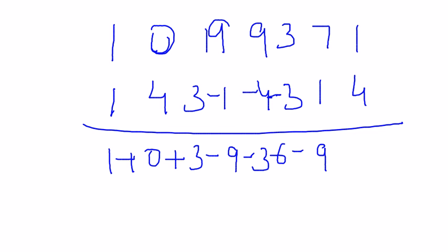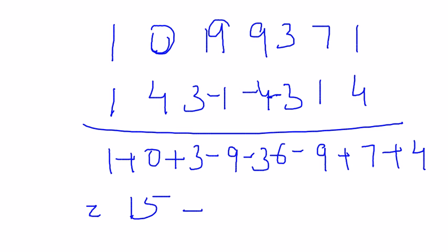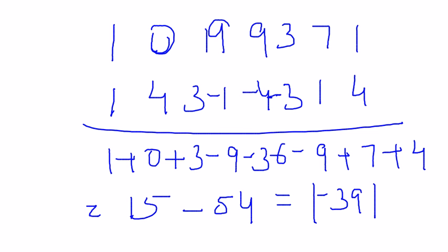Continuing: 1 cross 7 gives 7, 4 cross 1 gives 4. Now evaluating: 1 plus 3 is 4, plus 7 is 11, plus 4 is 15. Then 15 minus 9 minus 36 plus 45 minus 9 gives minus 39. Taking the absolute value, 39 is exactly divisible by 13. So we conclude that 1993710 is perfectly divisible by 13.